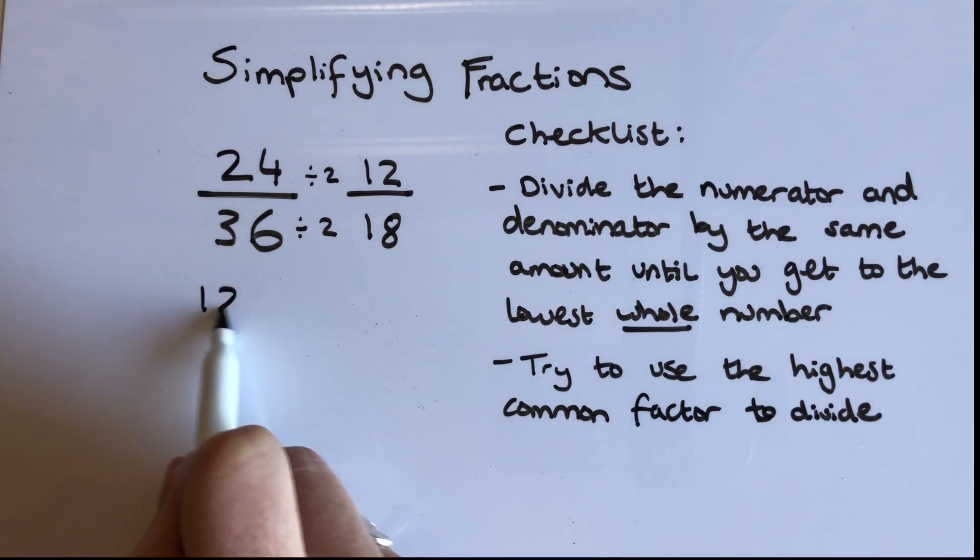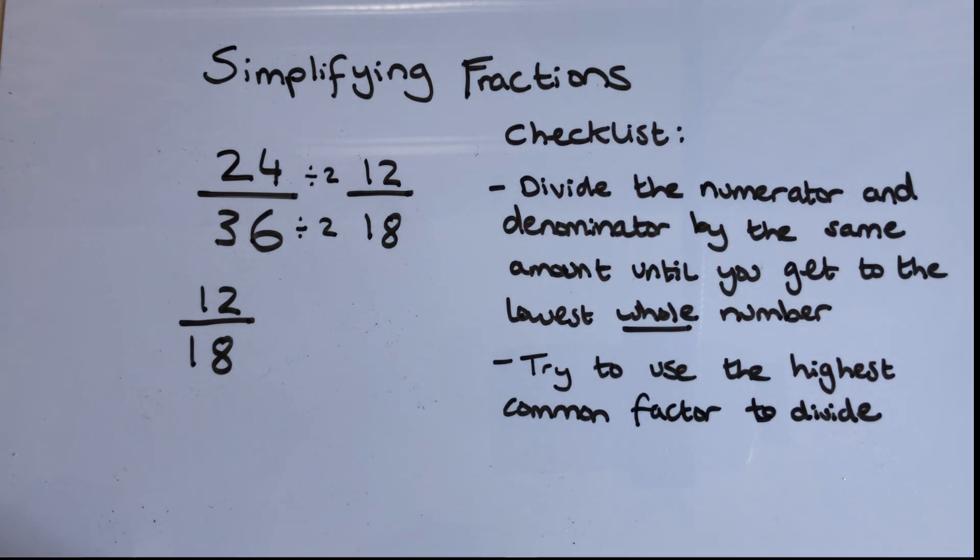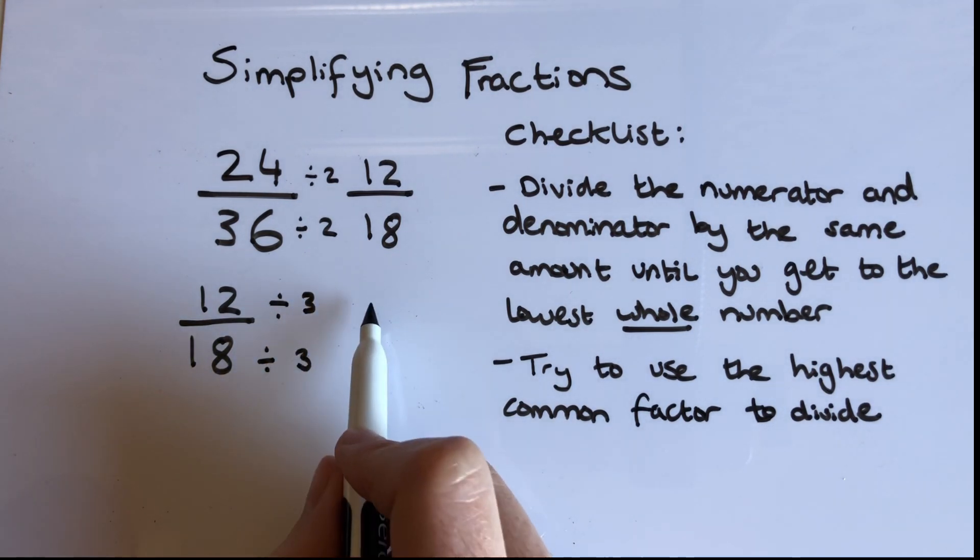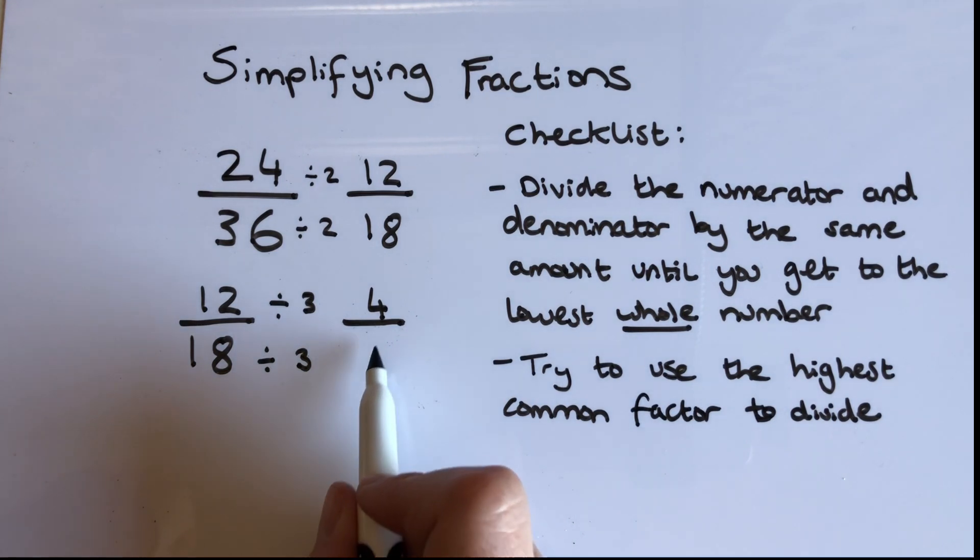So if I now take that fraction and divide that again, I could maybe see that 3 goes into 12 and 3 goes into 18, so I'll try that. 12 divided by 3 and 18 divided by 3 leaves me with 4 over 6.